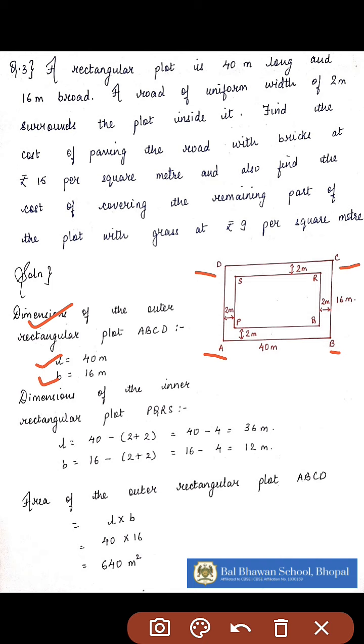Now as the road is built inside the plot leaving a width of 2 meters, the length of the inner rectangle will be 40 minus 2 from the left hand side and 2 from the right hand side. That means 40 minus 4 which is 36 meters.